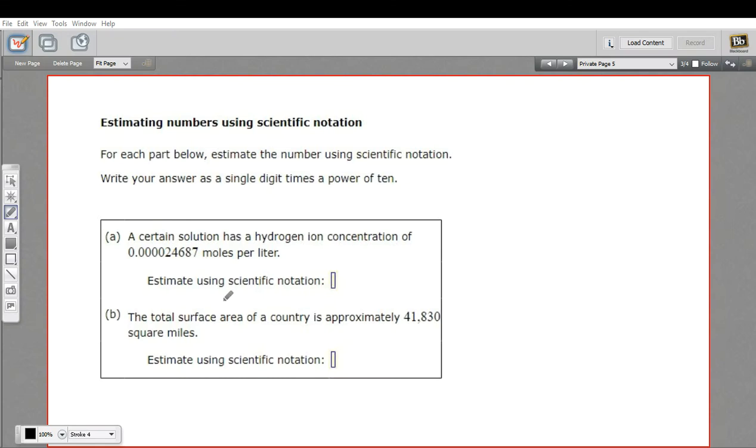Sometimes in science, a ballpark answer is good enough. In this particular problem, we have a solution with a hydrogen ion concentration of 0.000024687 moles per liter. That may be way more accurate than we need for this particular situation.